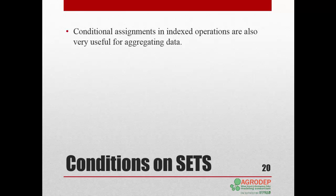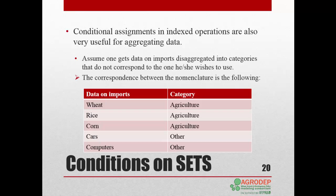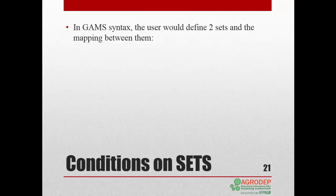Another instance where conditional assignments in indexed operations are very useful is when aggregating data. Suppose we want to aggregate data on imports into categories corresponding to the user's need. If we use the following nomenclature, we want the detailed list of imports on the left to be aggregated into the two main categories on the right — agriculture and other. In GAMS syntax, you must define two sets and a subset that maps the elements of the data to the two sets according to the previous table.